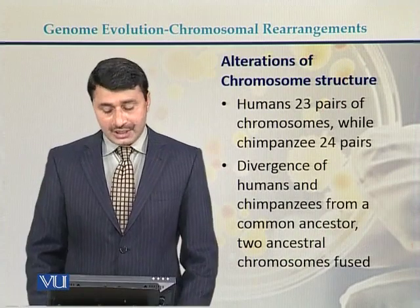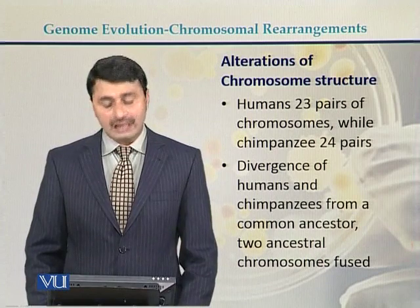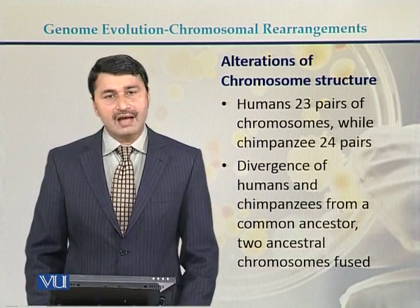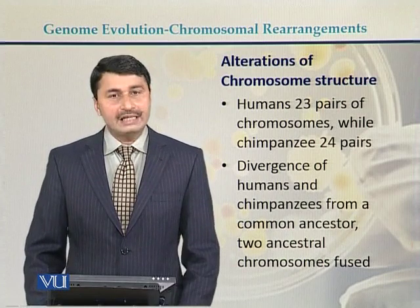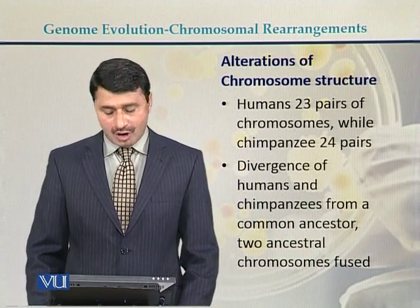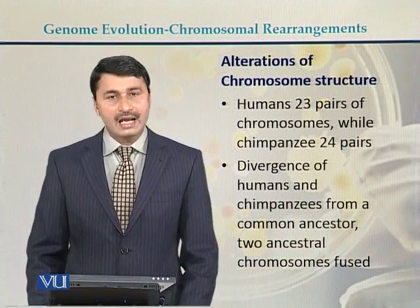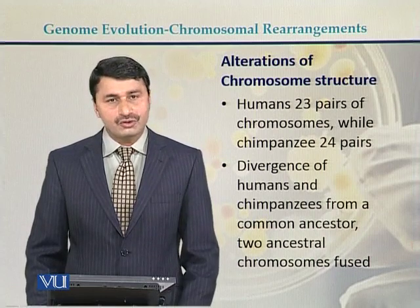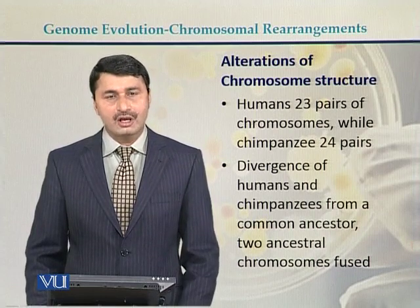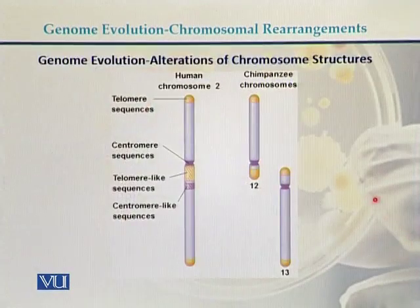Humans have 23 pairs of chromosomes, while chimpanzees have 24 pairs of chromosomes. The divergence of humans and chimpanzees from a common ancestor is explained by two ancestral chromosomes fusing to each other.